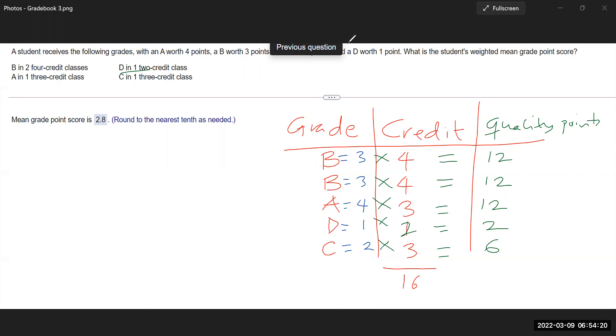Now we need to also sum the quality points. So we're going to add all these together. Add all these together. Add them. And when you put these together, so 12 by three plus two plus six, and this gives you 44.